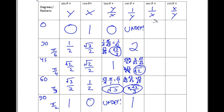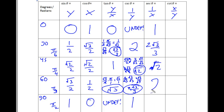Now we're going to flip 1 over x for the secant. The cool thing is that this column is going to be the whole chart backwards: 1, then 2 square root of 3 over 3, then square root of 2, then 2, then undefined. You'll notice that your sine and cosine tables are backwards of each other, and your cosecant and secant tables are backwards of each other.